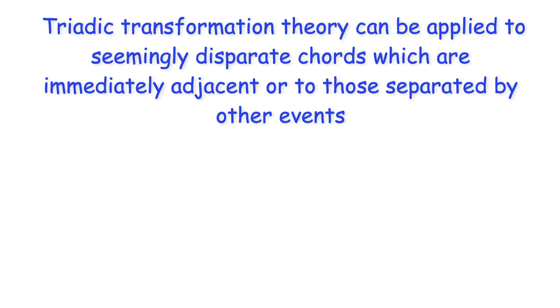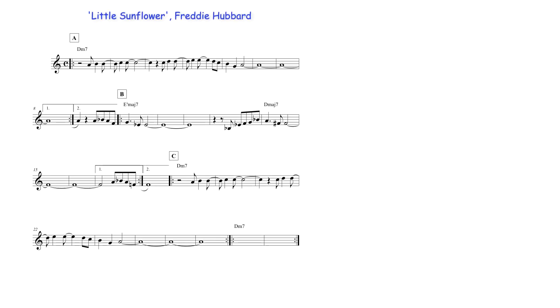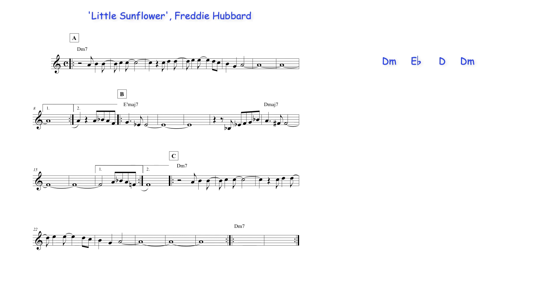Triadic transformation theory can be applied to seemingly disparate chords which are immediately adjacent or to those separated by other events. An example of the first type can be seen in the jazz standard Little Sunflower, which uses chords creating a progression that may be explained in several ways, including a 1 b2 major 1 progression in the key of D minor. Triadic transformation theory also reveals that each of Little Sunflower's chords are connected by basic and compound transformations, including the S transformation, which moves between major and minor triads whose root notes are a semitone apart. This operation retains a third of each triad while the first and fifth degrees ascend or descend by minor second, so the transformations together form two sets of alternating P and S transformations.